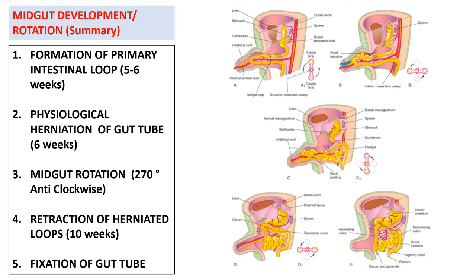During this physiological herniation, the initial 90 degrees of anticlockwise rotation took place. The third step was the midgut rotation, of which the 90 degrees is already coinciding with the physiological herniation of the gut tube. The remaining 180 degrees of midgut rotation takes place with the fourth step, which is the retraction of herniated loops at the tenth week of development.